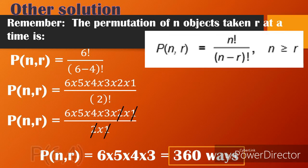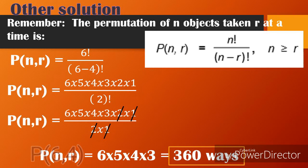Another solution using the formula: P(n, r) = n! / (n − r)!, where n ≥ r. Substituting n = 6 and r = 4, we get P(6, 4) = 6! / (6 − 4)! = 6! / 2!. Since 6! = 6 × 5 × 4 × 3 × 2 × 1 and 2! = 2 × 1, we cancel out the 2!, leaving 6 × 5 × 4 × 3 = 360 ways.